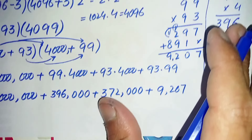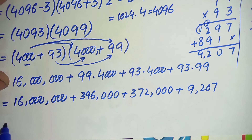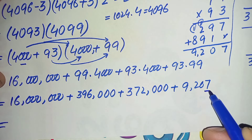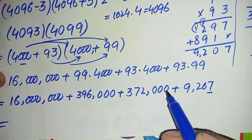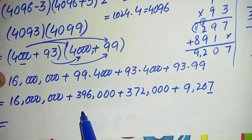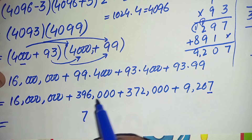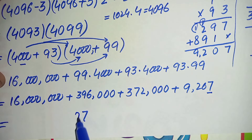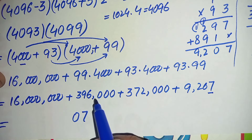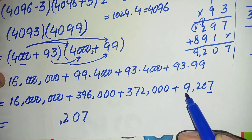Now we will add all four partial products in a row starting from the ones position. In the ones position: 7 plus 0 plus 0 plus 0 is 7. In the tens position: 0 plus 0 plus 0 plus 0 is 0. In the hundreds position: 2 plus 0 plus 0 plus 0 is 2.